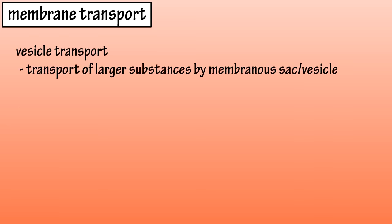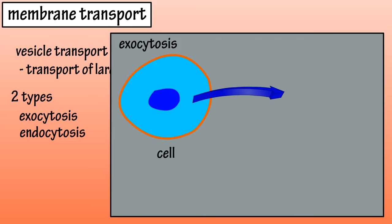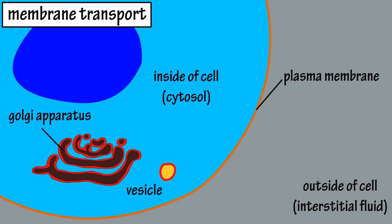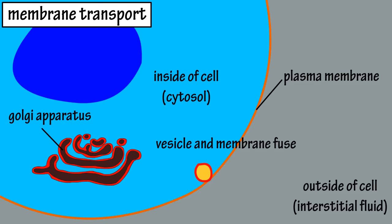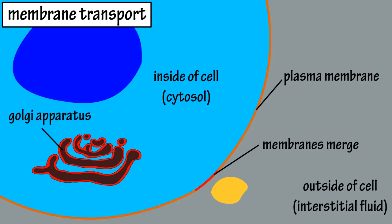Vesicular transport involves the transport of larger substances, such as proteins or large carbohydrate polysaccharides, across the plasma membrane. There are two types: exocytosis and endocytosis. In exocytosis, materials are secreted from the cell to the interstitial fluid outside. Typically, membranous vesicles formed by the Golgi apparatus transport materials to the cell's membrane. At the membrane, the phospholipid molecules of the vesicle fuse with those of the plasma membrane, and the contents of the vesicle are released outside the cell. The vesicle membrane then becomes part of the plasma membrane.